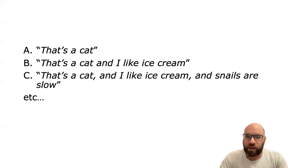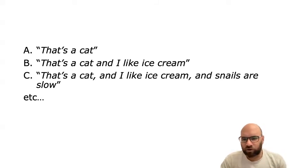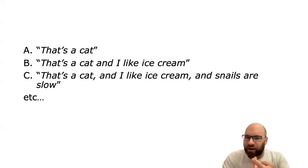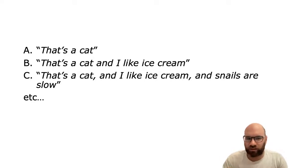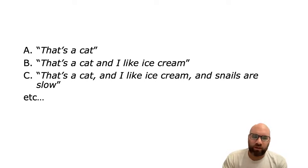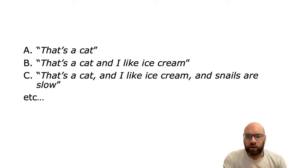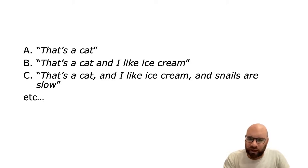To go back to the example that we ended the previous module with: if I say 'that's a cat,' there's an infinite number of stronger alternatives I did not say. So if I chose to say 'that's a cat,' that means I didn't say 'that's a cat and I like ice cream,' or 'that's a cat and I like ice cream and snails are slow.' All of these are stronger alternatives I could have said, because all of these entail the other sentence. But the problem is that people usually won't think that I mean it is not true that that's a cat and I like ice cream. So we need a way to explain why these alternatives do not come into play.